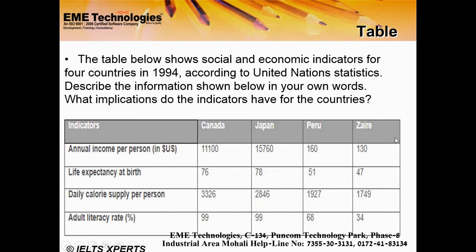Next is the Table. A table will be explained in the same way — using four paragraphs. The first paragraph is the introduction, the second and third are body paragraphs, and the fourth is the conclusion. For example: Social and Economic Indicators for four countries in 1994, according to United Nations Statistics.